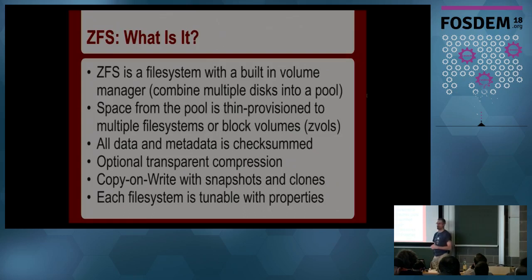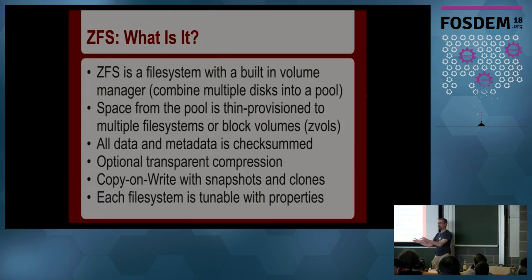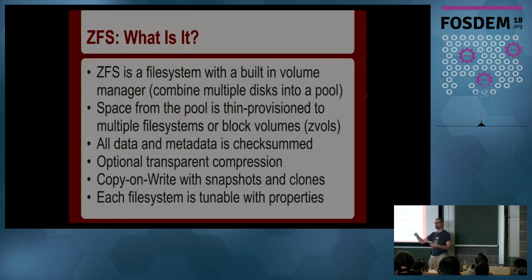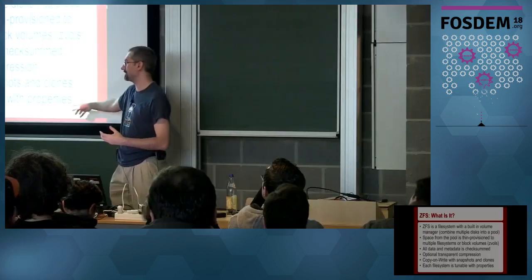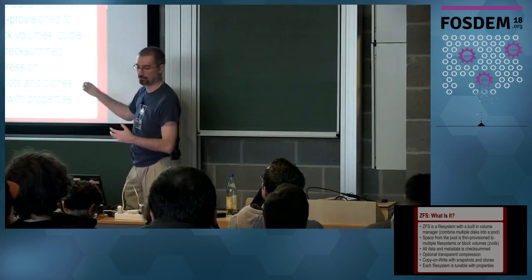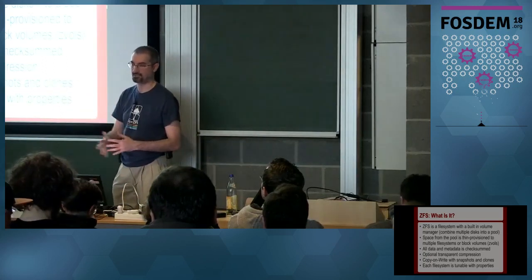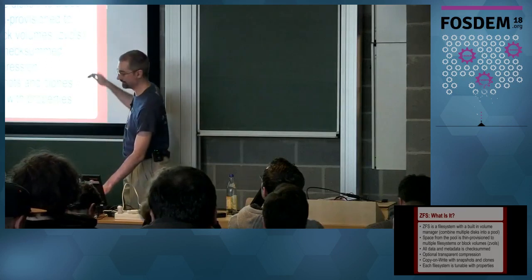ZFS is all copy-on-write, so you get instantaneous snapshots and can create clones — writable snapshots. In the event of a crash or power failure mid-write, the old version of the file is still preserved elsewhere on disk and the system can roll back to it, rather than ending up with a half-overwritten corrupt file. Because it combines the file system and volume manager, you create many file systems on top of the pool, each with tunable parameters like enabling or disabling compression, creating separate snapshots, and many other settings.